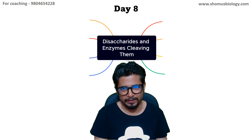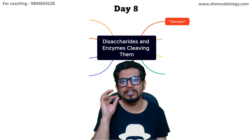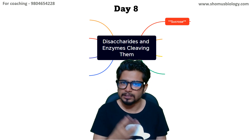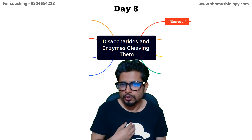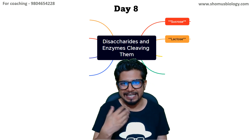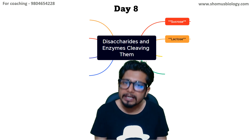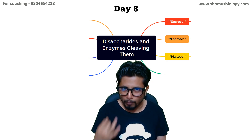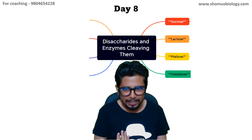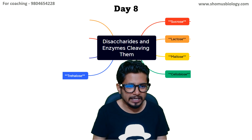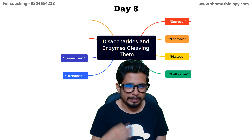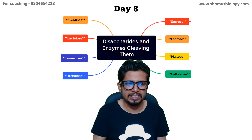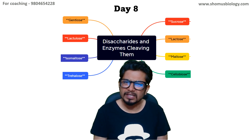Let's start. The first one is sucrose — a very common disaccharide, the common sugar that we eat. Then lactose, another very abundant disaccharide found in milk. Then we have maltose, cellobiose, trehalose, isomaltose, lactulose, and gentiobiose. These are all the different disaccharides we are talking about.